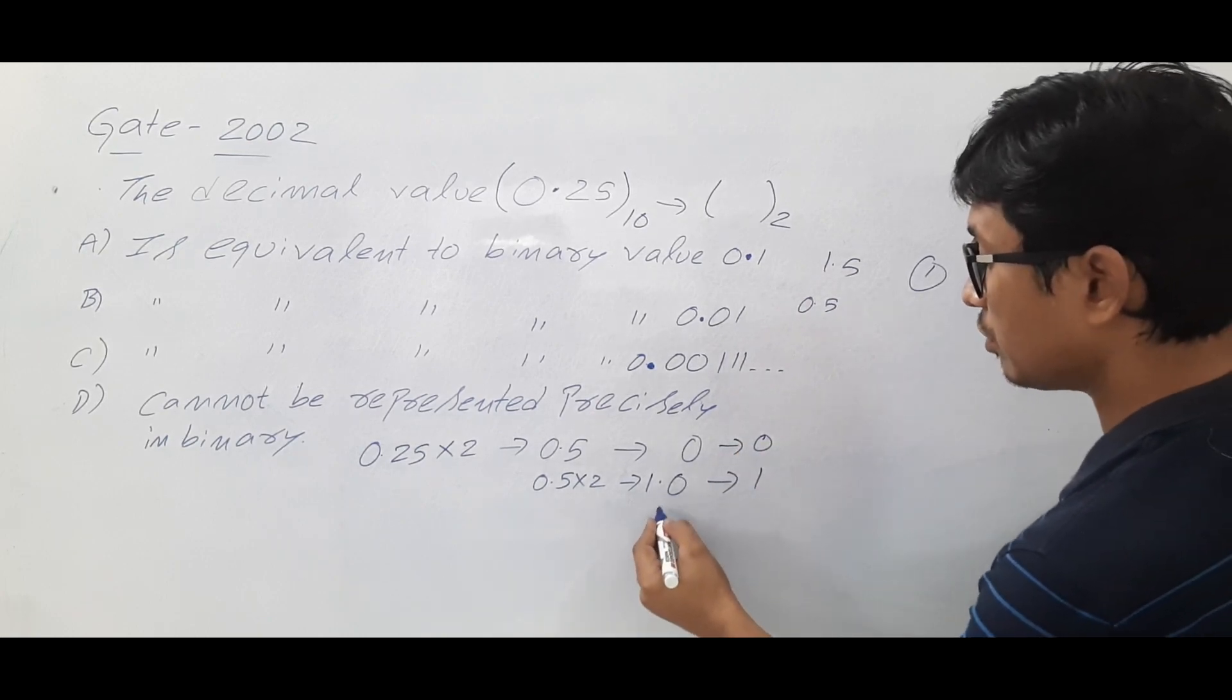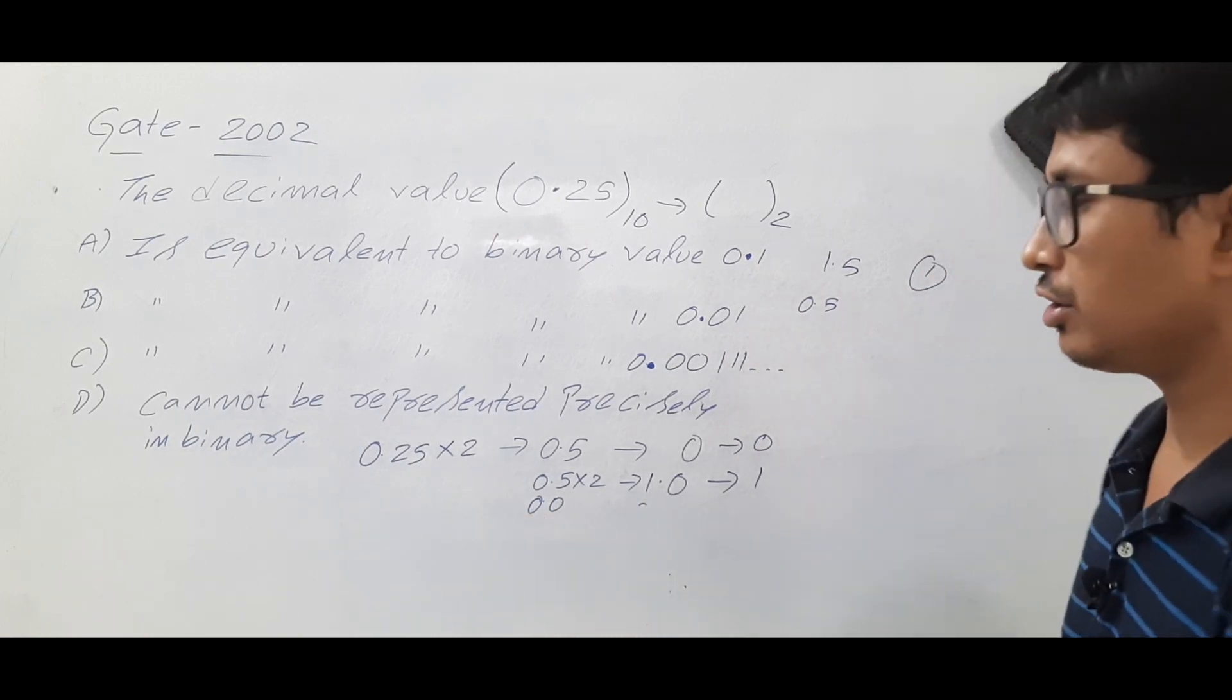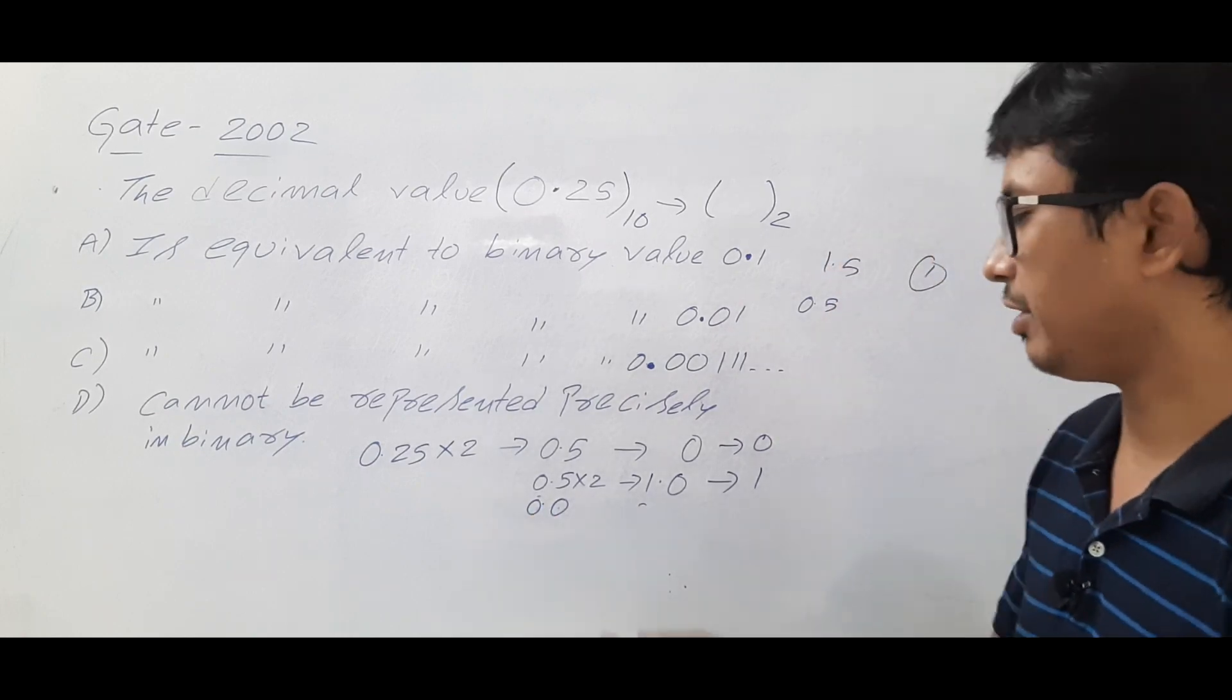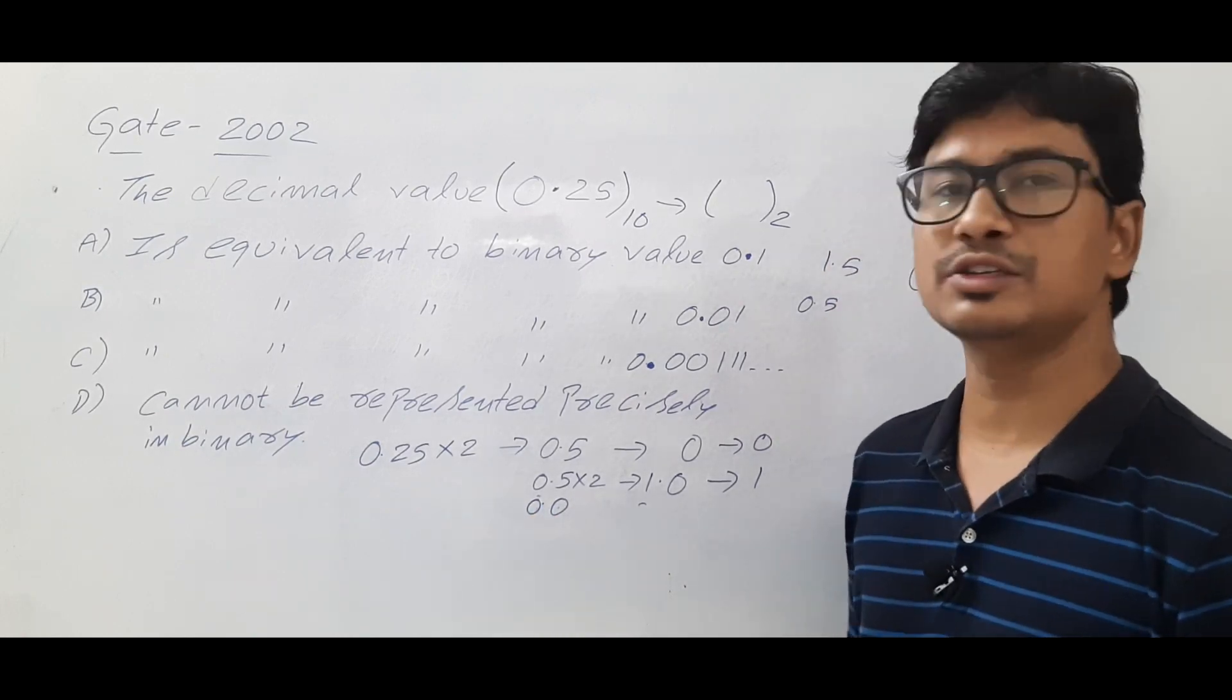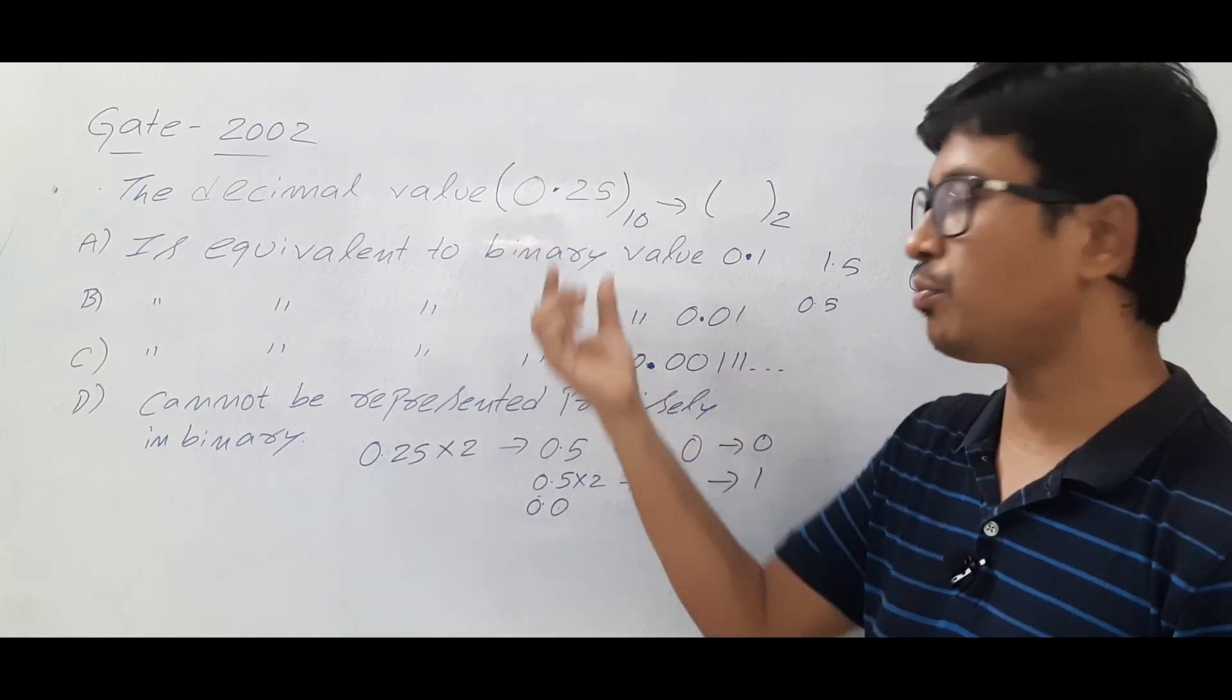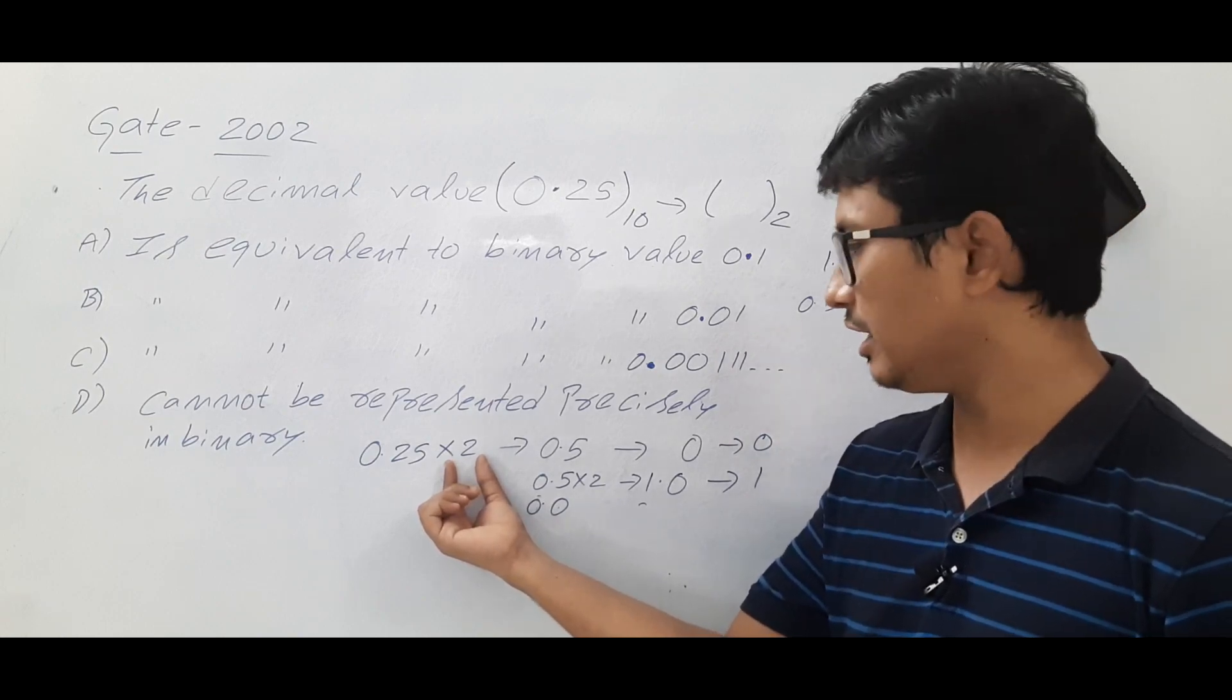Now if I take the 1 from here, it will be 0.0. If I multiply with 2, I will get 0 only. So what I have done: I have taken the 0.25, I have multiplied with 2 because I need to convert into a binary number.